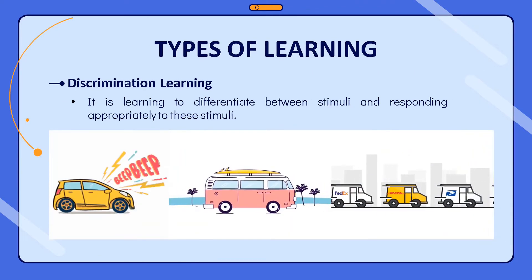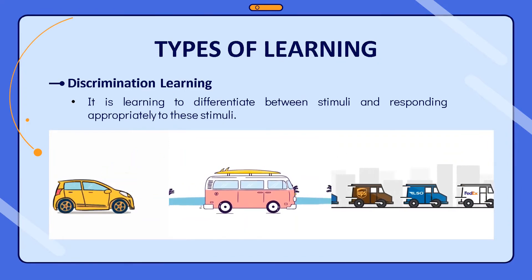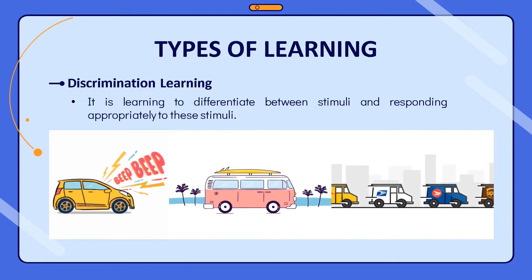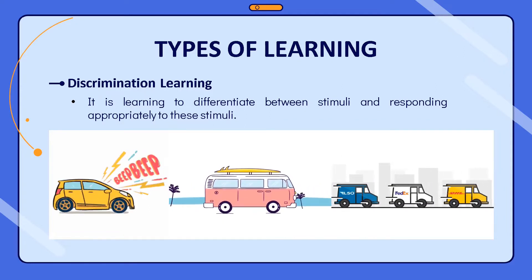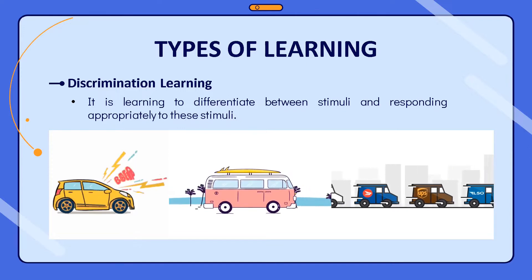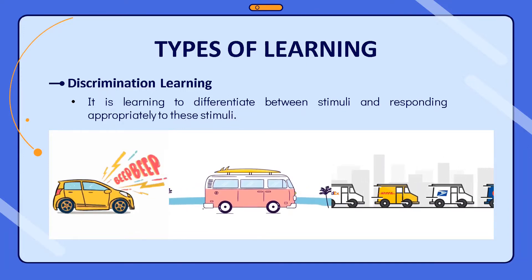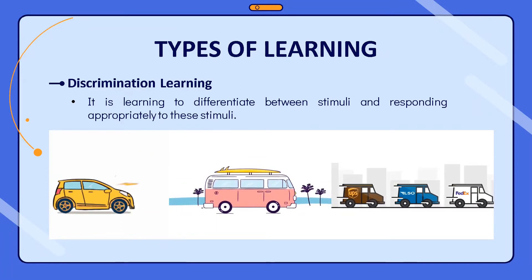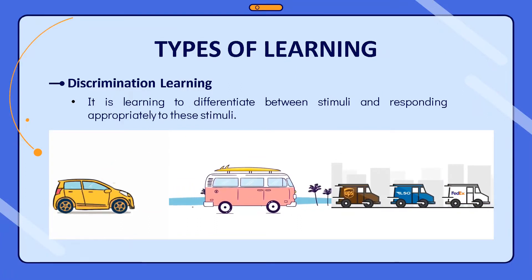Discrimination learning differentiates stimuli and involves reacting appropriately to those stimuli. An example is being able to distinguish the sound of horns of different vehicles like a bus, car, and ambulance. It is literally the ability to classify, categorize, or differentiate.